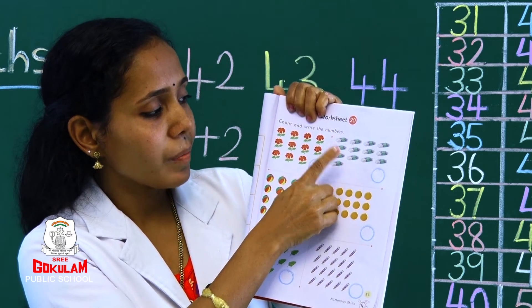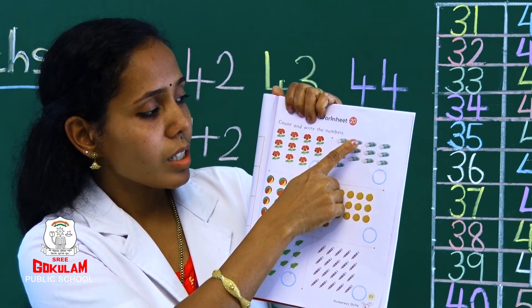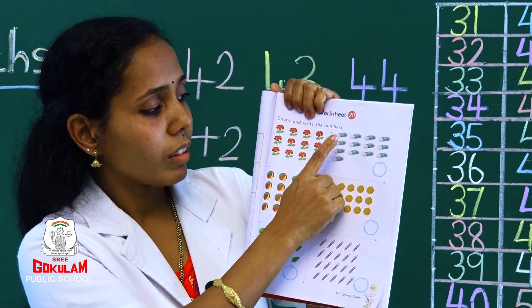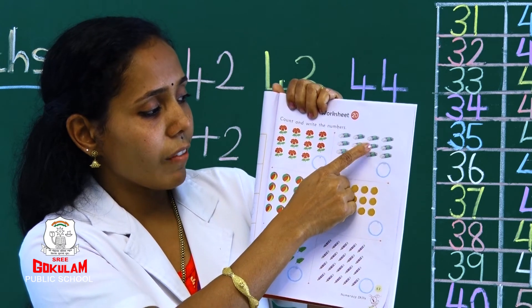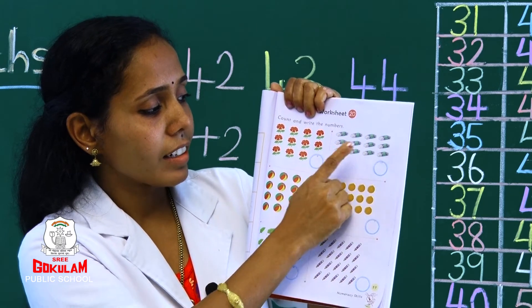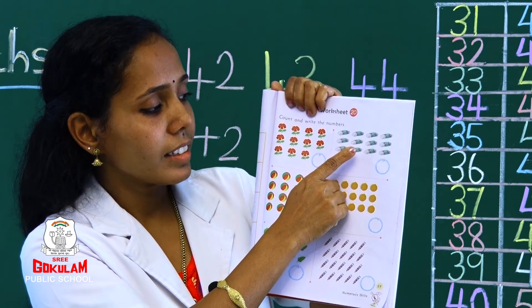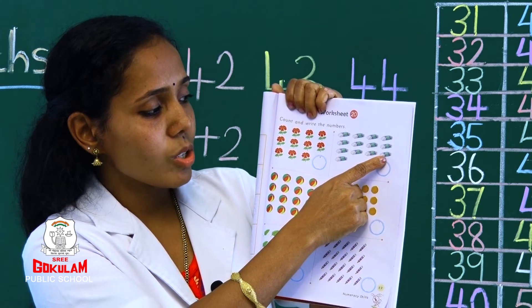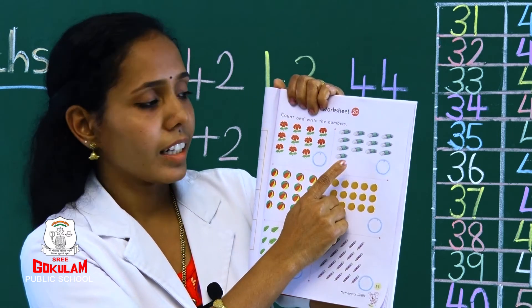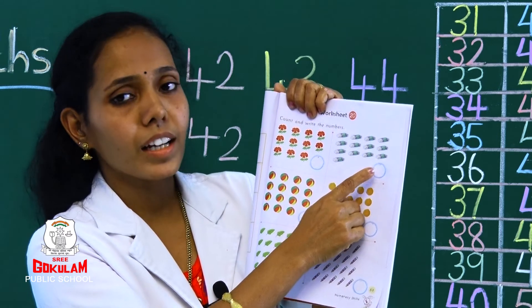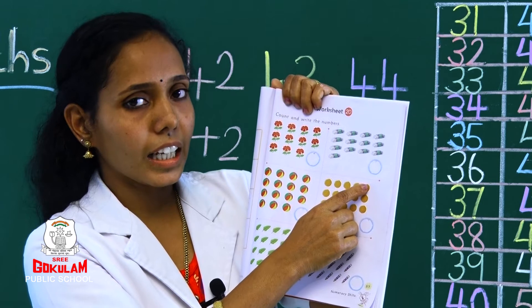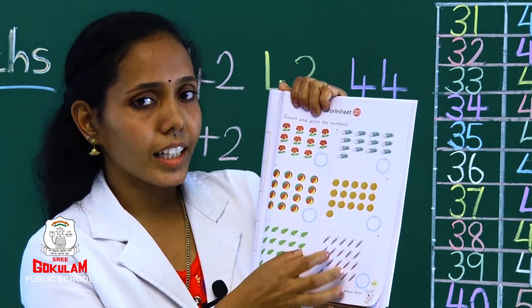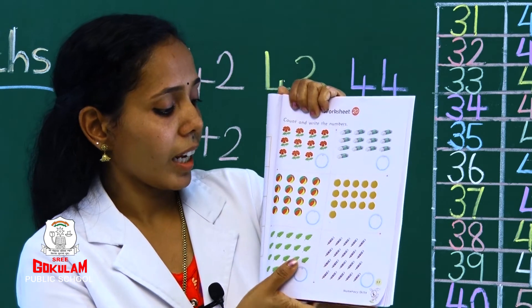Next, risers are 1, 2, 3, 4, 5, 6, 7, 8, 9, 10, 11, 12, 13. Write number 13: 1, 3, 13. Okay.